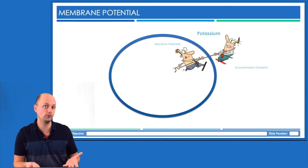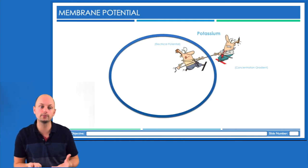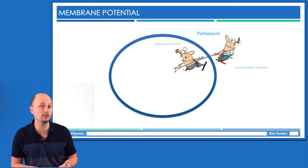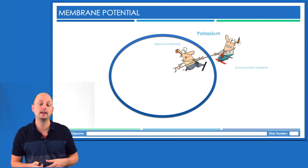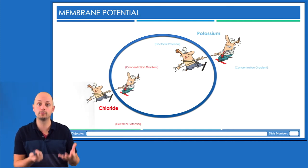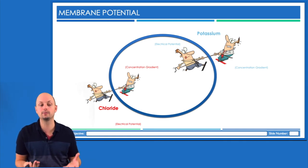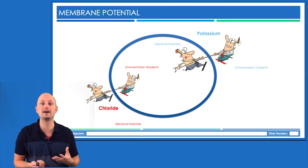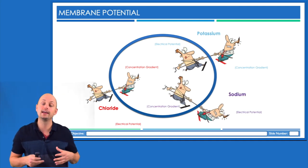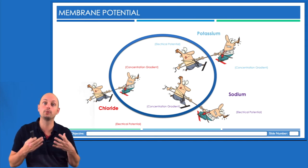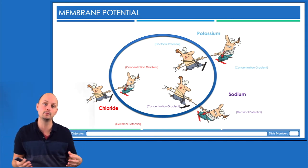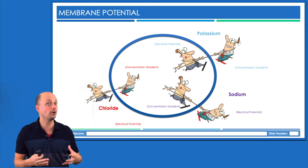Potassium wants the voltage to be at its equilibrium potential of minus 75 millivolts. Chloride wants membrane potential to be at its equilibrium potential of minus 59 millivolts. And sodium wants membrane potential to be at its equilibrium potential of positive 58 millivolts. All of these ions are pulling at the exact same time, trying to pull membrane potential towards their equilibrium potential.